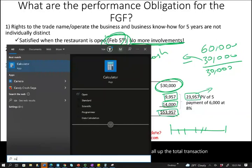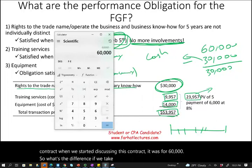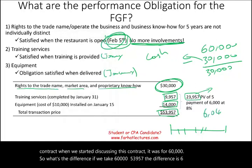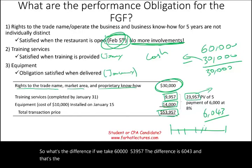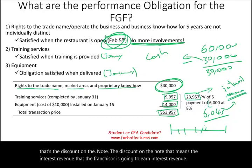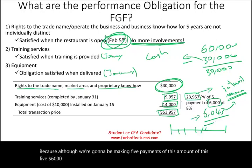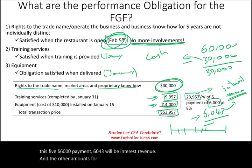But we said the contract was for $60,000, so what's the difference? Taking $60,000 minus $53,957, the difference is $6,043. That's the discount on the note — the interest revenue that the franchisor is going to earn. Although we're going to be making five payments of $6,000, $6,043 of that total will be interest revenue, and the other amount is for the training services and the equipment.